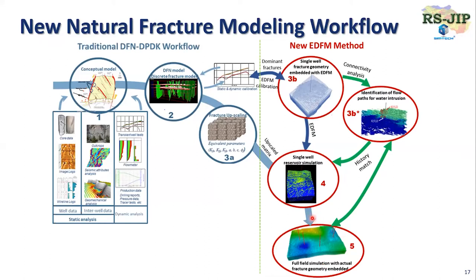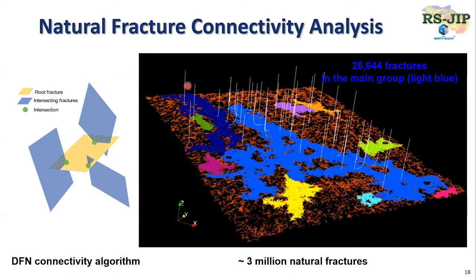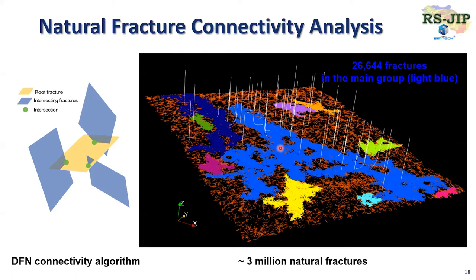For natural fracture reservoirs, we developed another key module called natural fracture connectivity analysis, because there is no commercial DFN simulator to do this. I show one big field case application with about 3 million natural fractures — we can do quick analysis. You can see different colors showing different groups of natural fracture connectivity. The biggest group, shown in light blue, includes more than 26,000 natural fractures. This connectivity analysis is useful for drilling new wells in the highly connected fracture area to get more production.